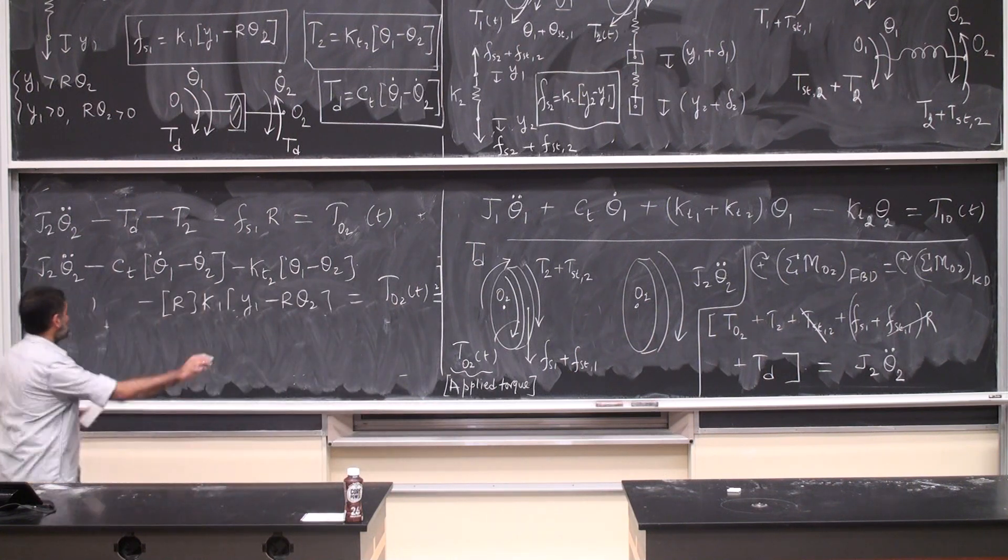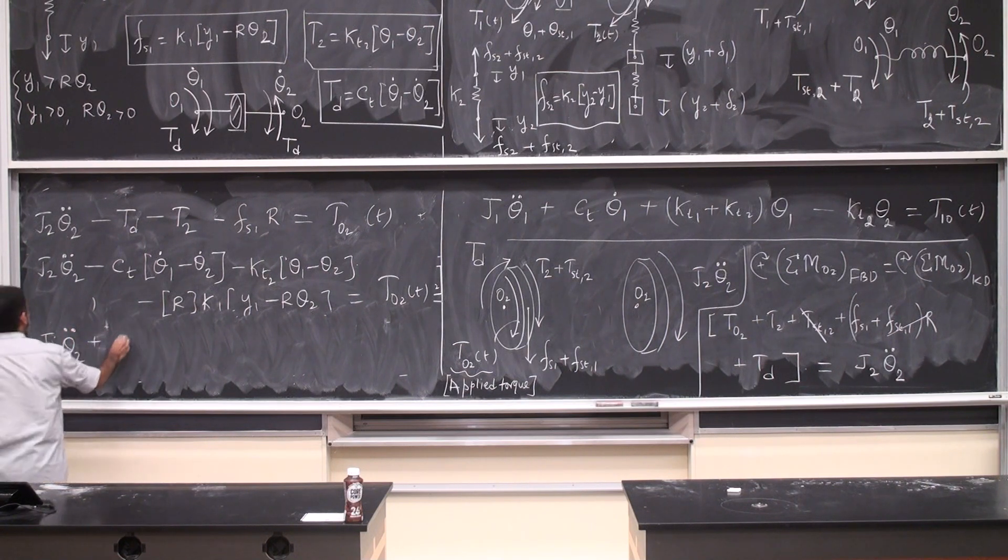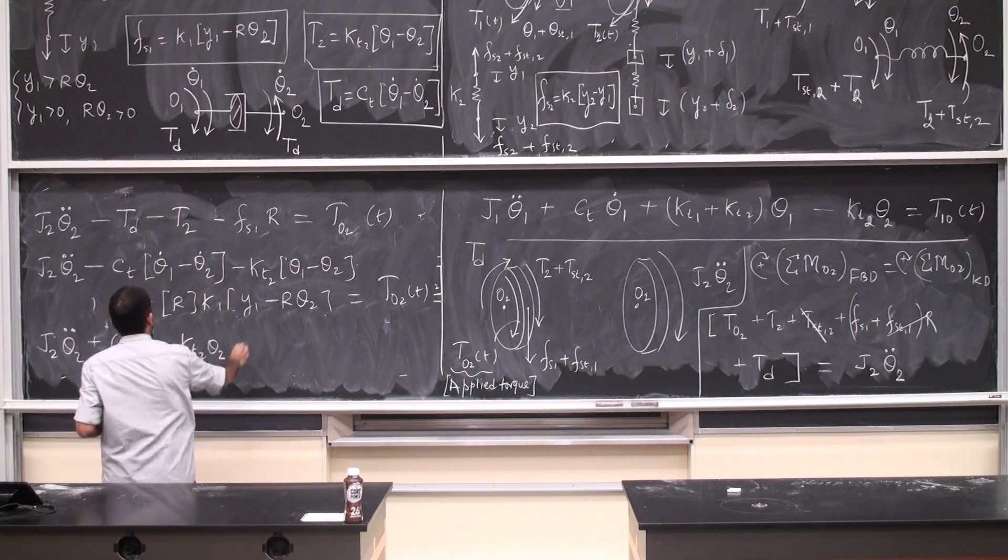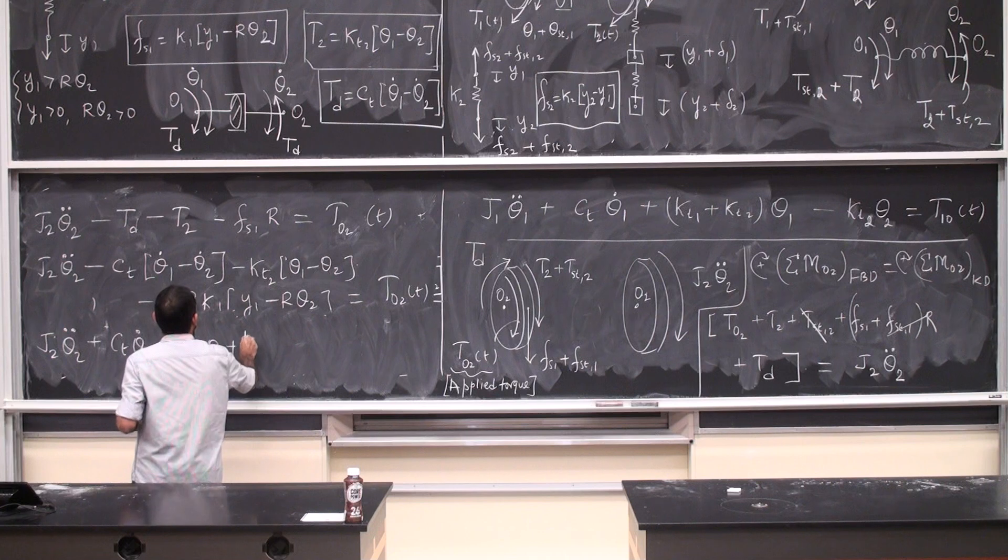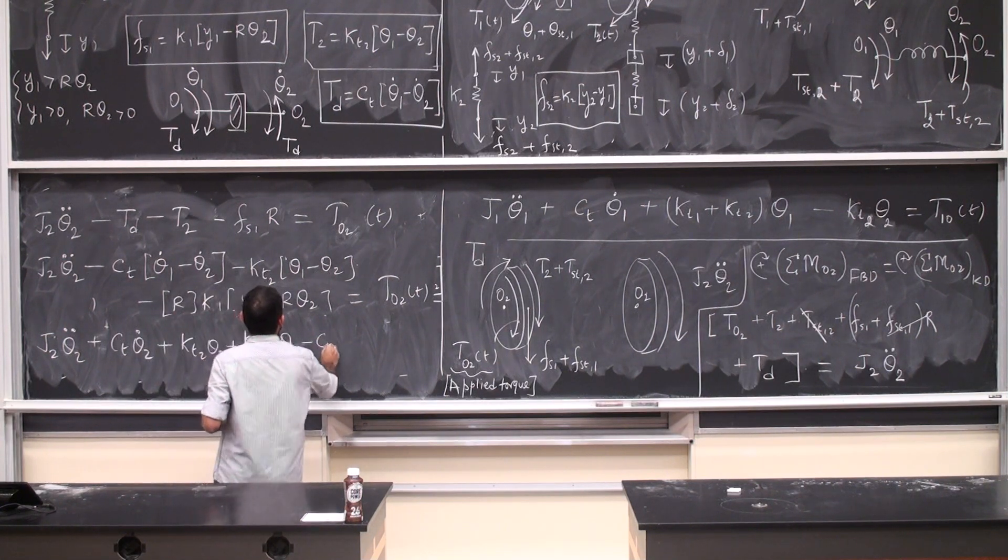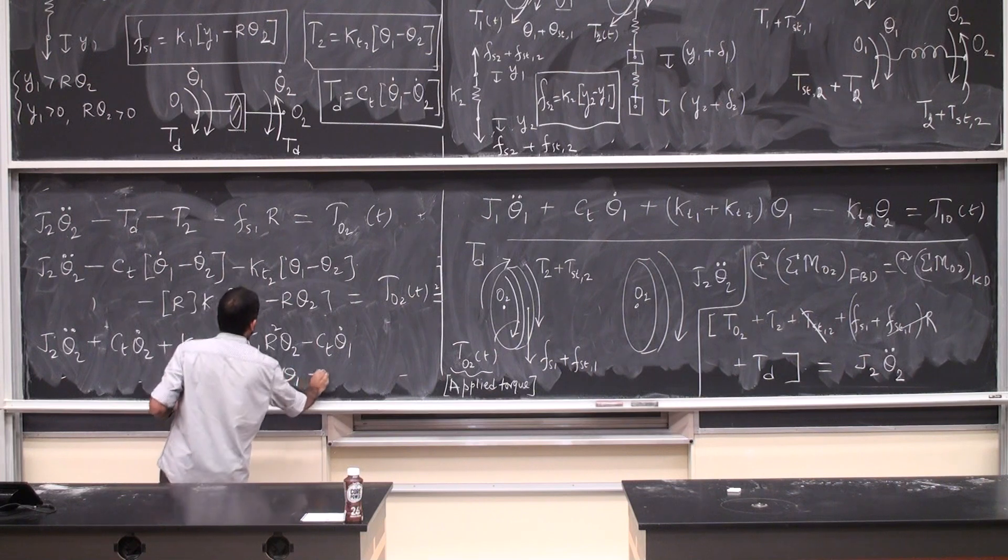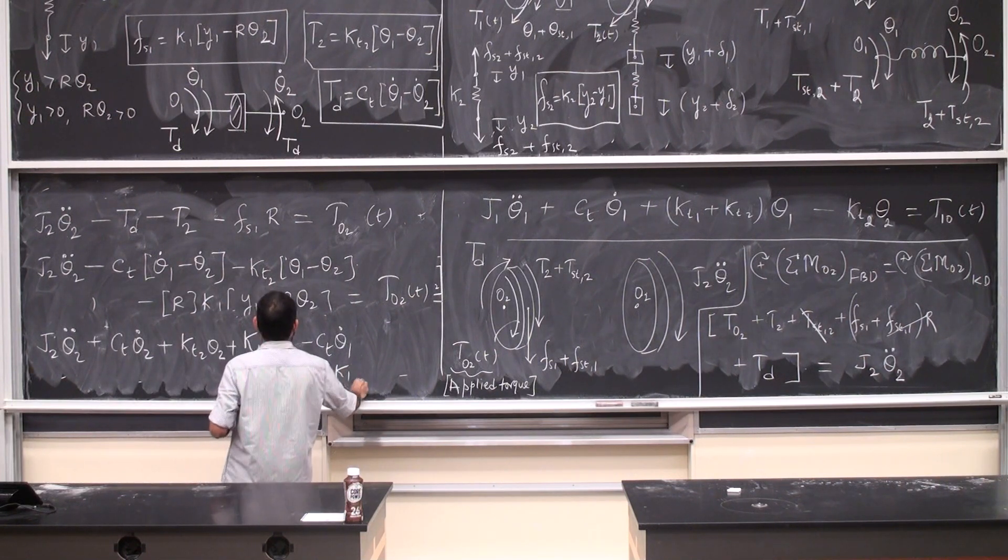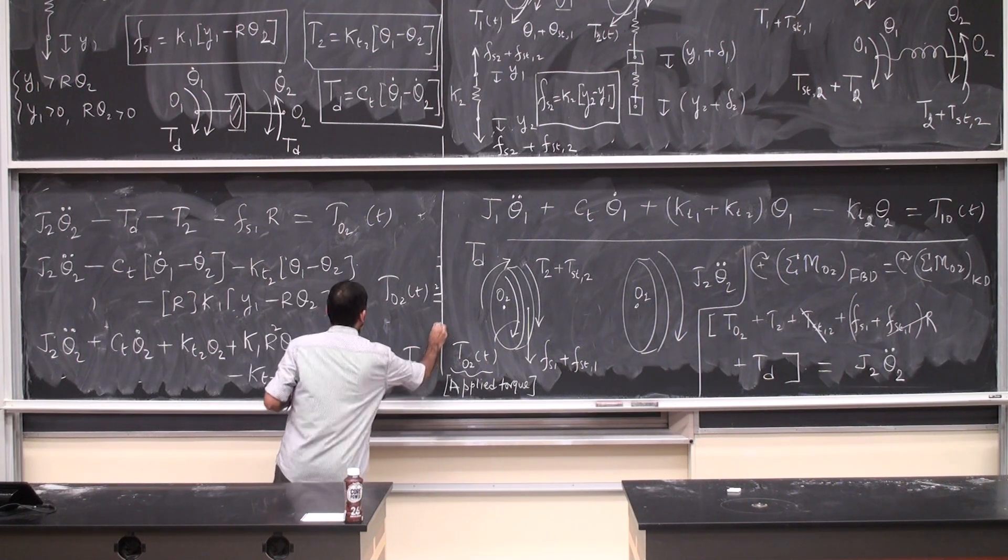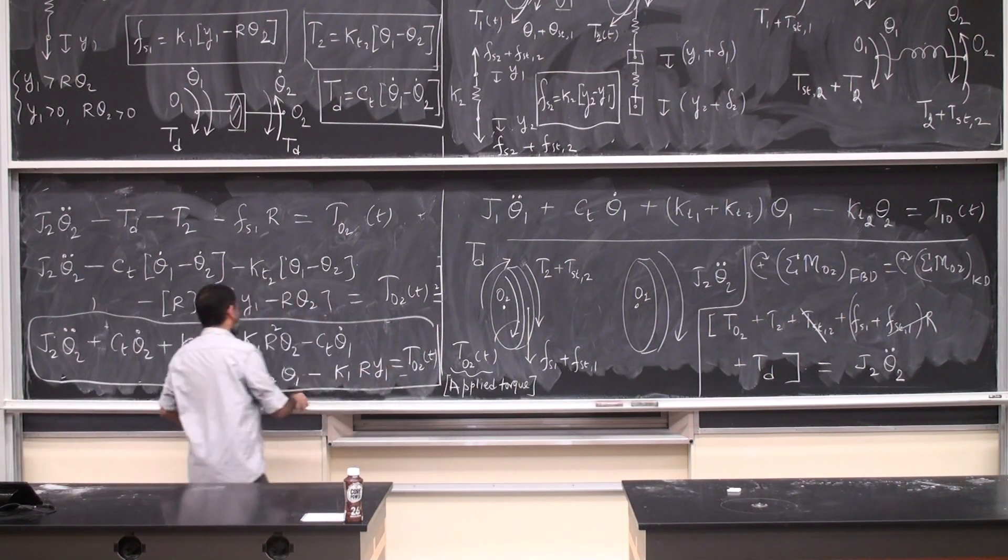And very last, the equation of motion: J2 theta 2 double dot, ct theta 2 dot, kt 2 theta 2 plus k1 r square theta 2 minus ct theta 1 dot, k2 theta 1 minus k1 r y1. All of this.